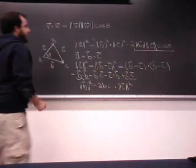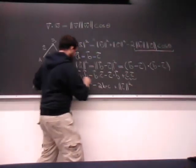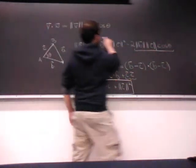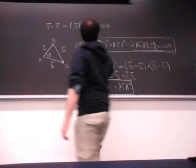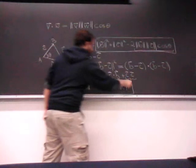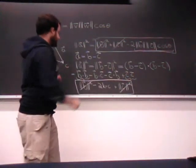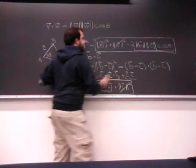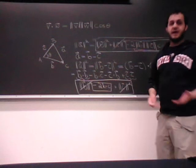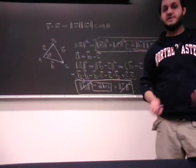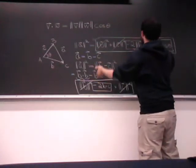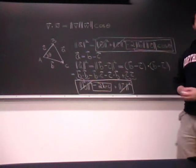So what just happened? On one side we have the law of cosines expression, and on the other side we have our expanded dot product expression. The magnitude of b squared and magnitude of c squared appear on both sides and cancel. The only difference remaining is negative 2 times b dotted with c on one side, and negative 2 times the magnitude of b times the magnitude of c times the cosine of the angle in between on the other. Since both expressions are equal, the proof is complete. Thank you.